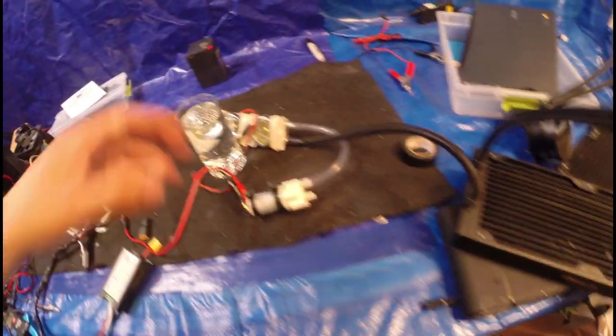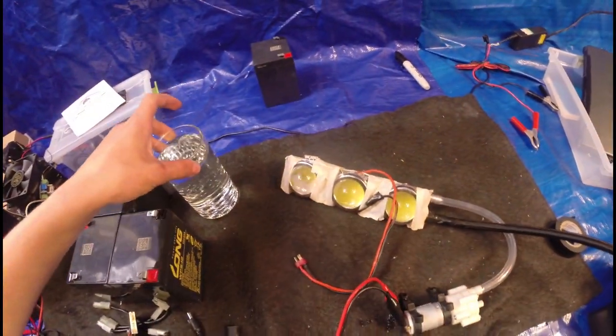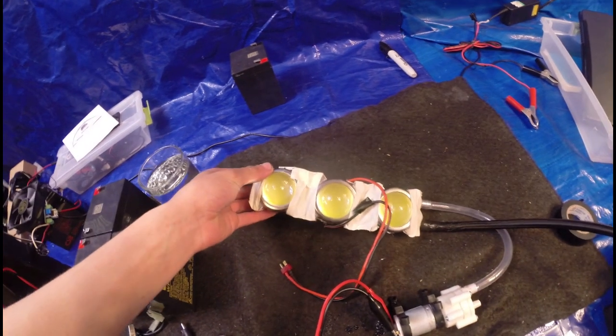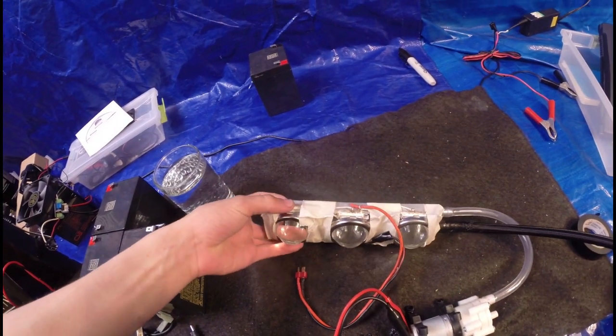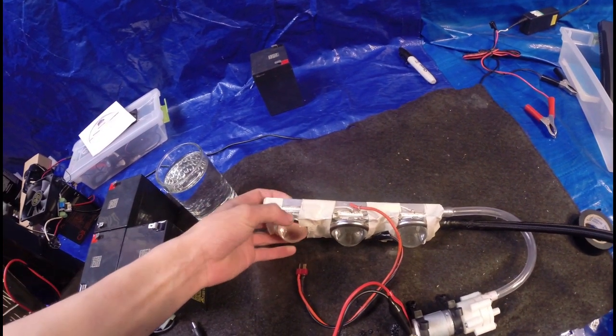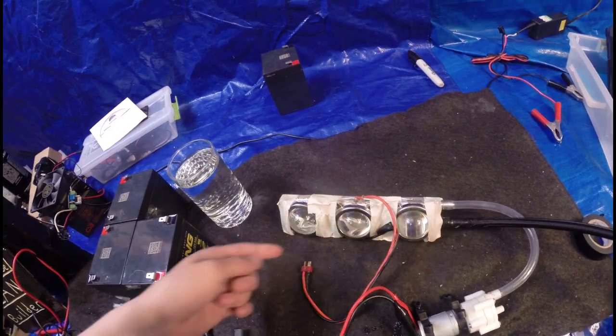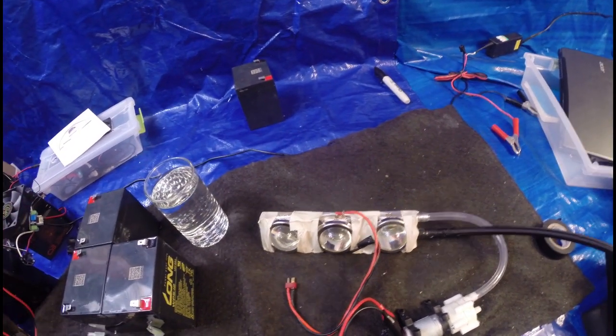In this video I'm going to be experimenting with my 300 watt water-cooled LED. I built this just a few days ago and it consists of three 36 volt 100 watt LED chips. You can buy these on eBay by just looking up what I just said.